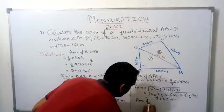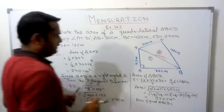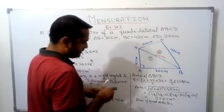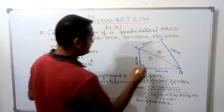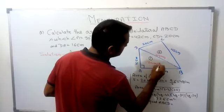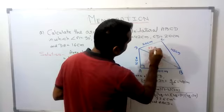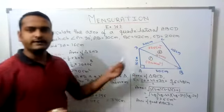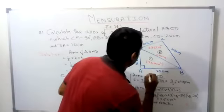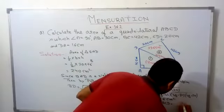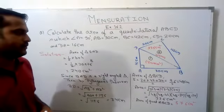Therefore area of quadrilateral ABCD, we have to add both areas. This area we are getting 240 centimeters square and this area 336 centimeters square. So answer will be 576 centimeters square. Clear?